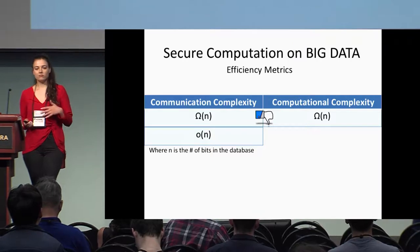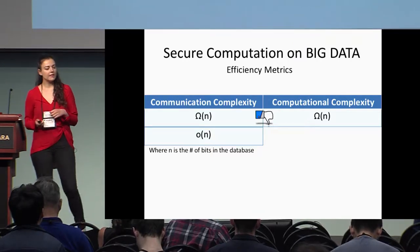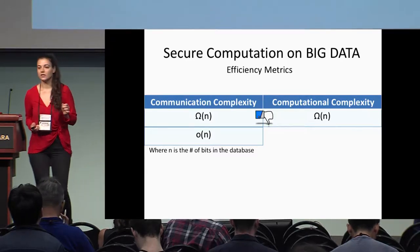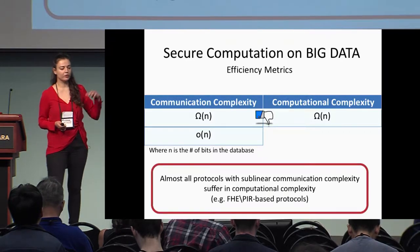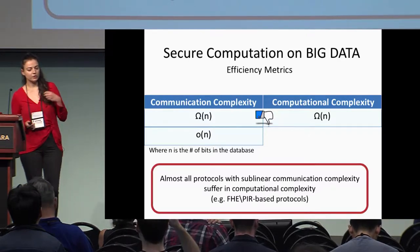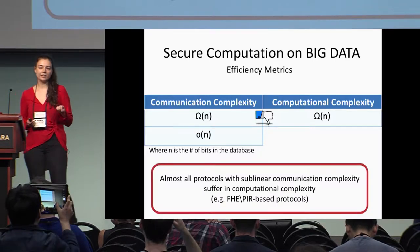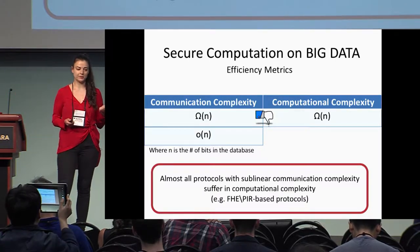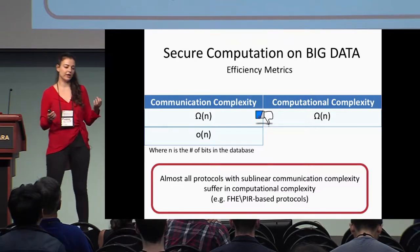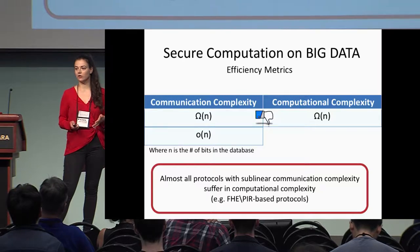All generic protocols we know have sublinear communication complexity in the size of the database, like fully homomorphic encryption and PIR-based protocols. However, these protocols pay the price of high computational complexity, which is linear in the input size of the database. In fact, it's bad linear in the sense that it doesn't require symmetric cryptographic operations but requires heavy public key operations.